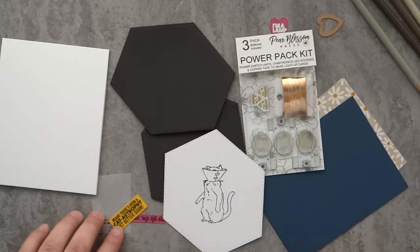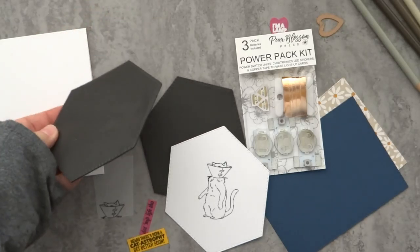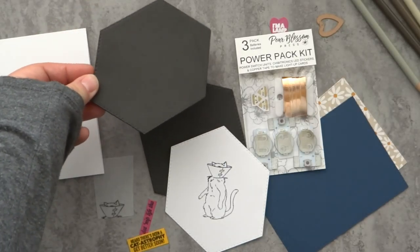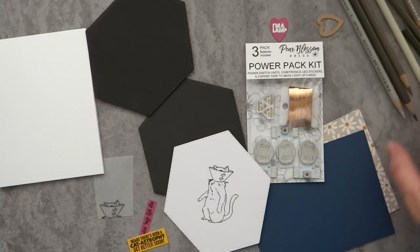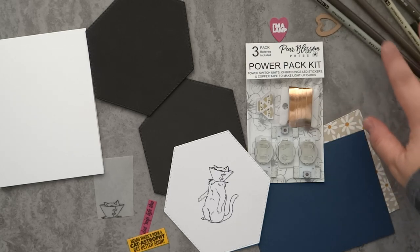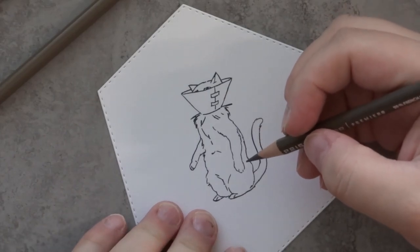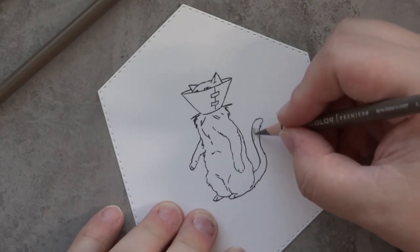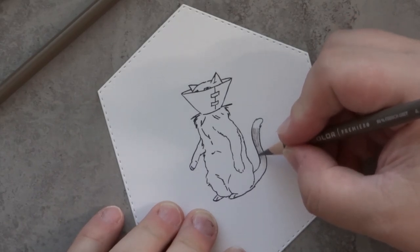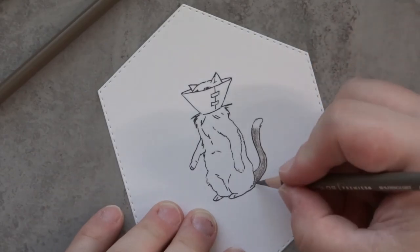Everything I'm going to be using today is a large hexagon die from Art Impressions, along with that cat-tastrophe set, and of course the power pack kit from Pear Blossom Press, along with different papers and Prismacolor pencils to color in that cat, which I'm going to start with first. I stamped the cat using Gina K Amalgam ink onto the largest Art Impressions hexagon die. I love this shape, it's such a unique hexagon, a little different than most hexagons you see out there.